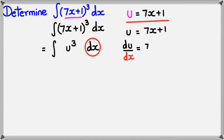So I can write du = 7dx, which means du/7 = dx. So what I've found is I've actually replaced dx with du/7, and that's what I'm going to do here. So I've got ∫u³, and instead of dx I'm going to have du/7.